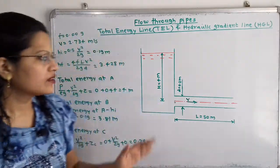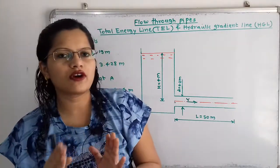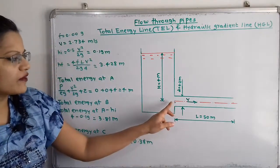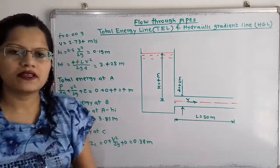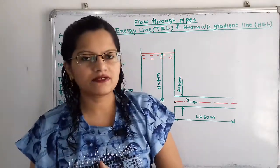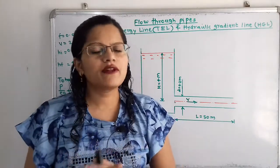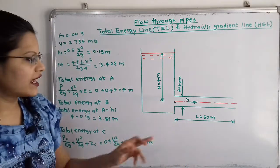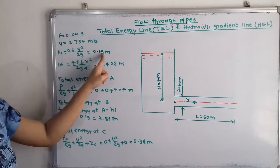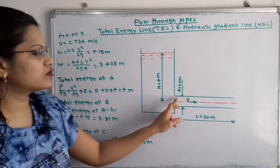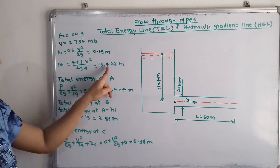Water from the tank enters the pipe, causing a head loss at the entrance. As water flows through the pipe over a length of 50 meters, it is in contact with the pipe surface, causing friction losses. The head loss at the entrance HI = 0.5 V²/2g = 0.19 meters. The head loss due to friction HF = 4FLV²/2gd = 3.428 meters.